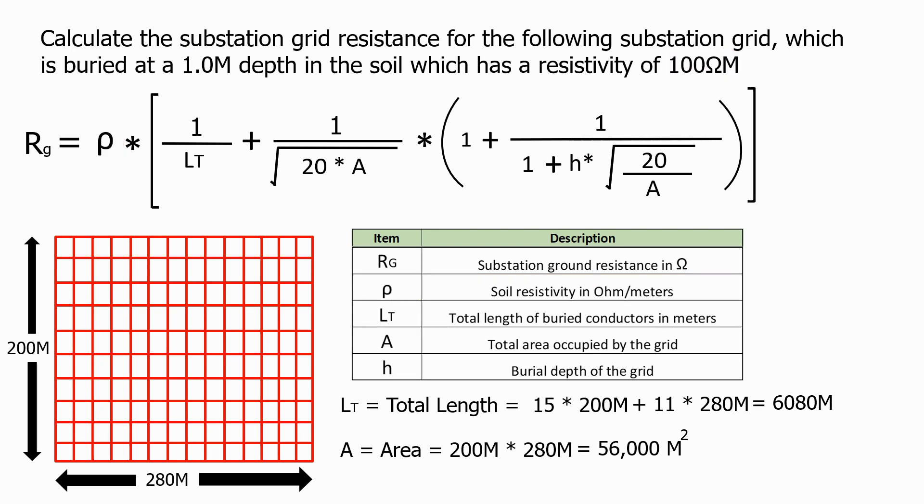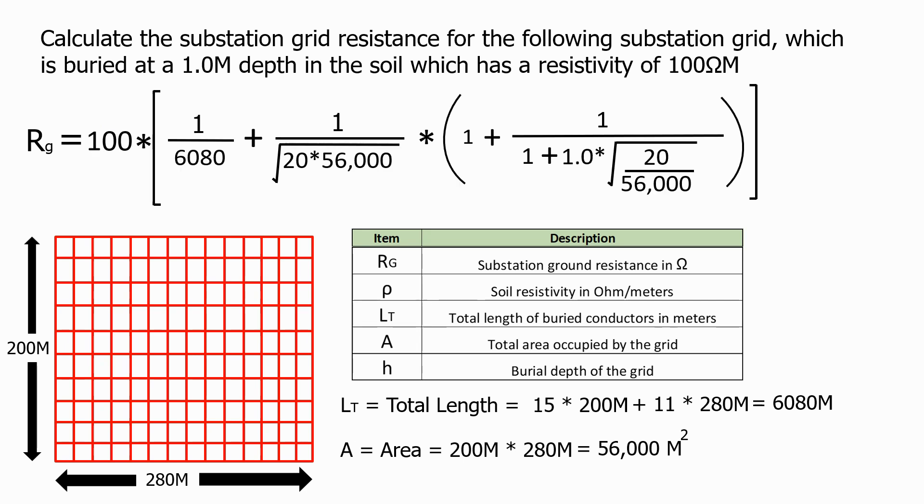Putting all these parameters into the calculation, we get a value of 0.204 ohms. What does this mean? Well, if we look remotely at the substation and attach a resistance metre, we will get a measurement of 0.204 ohms.